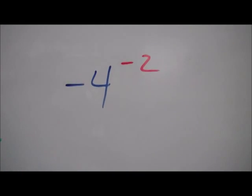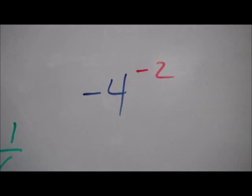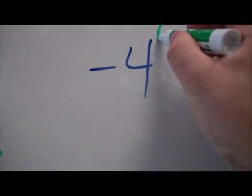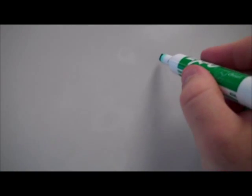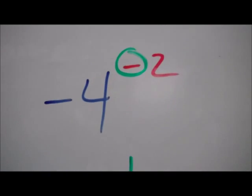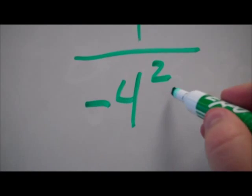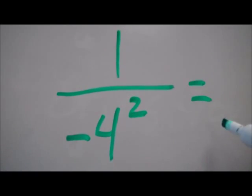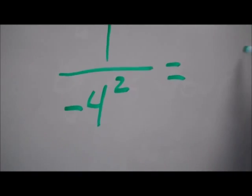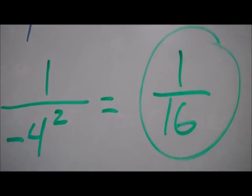What happens if we have a negative base raised to a negative power? The same rule applies with this negative — I make it 1 over, keep the base, keep the exponent: negative 4 squared. Negative 4 times negative 4 is 16, so 1 over 16 is my answer.